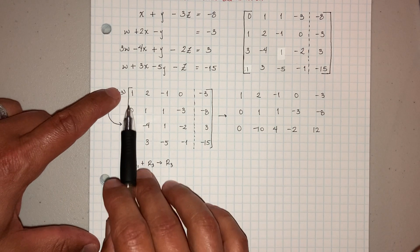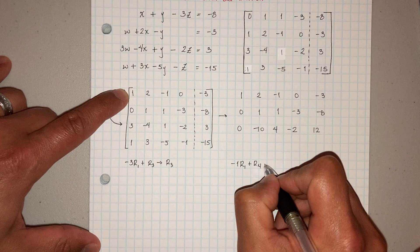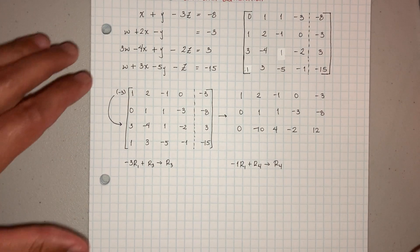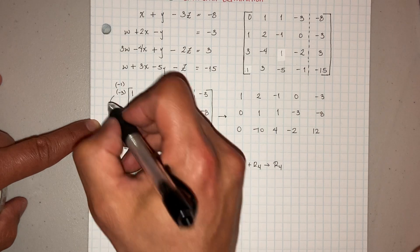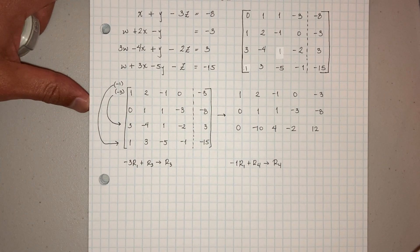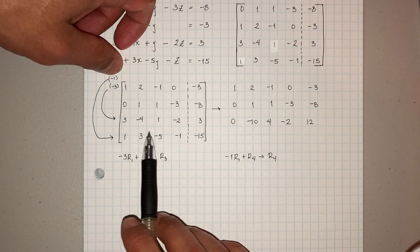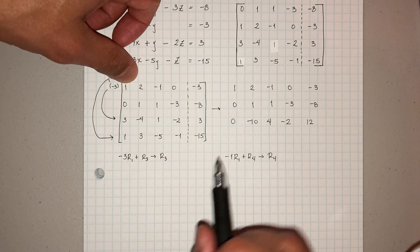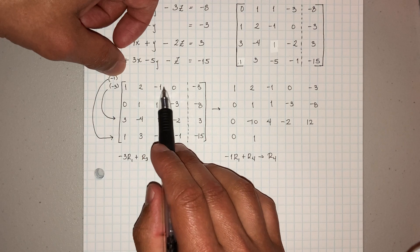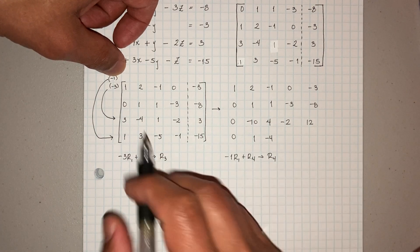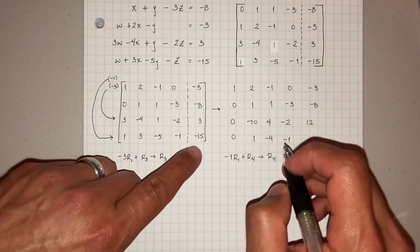So I'm going to take negative 1, multiply by the first row, and add it to the fourth row, replacing row 4. Negative 1 times 1 is negative 1, plus 1 is 0. Negative 1 times 2 is negative 2, negative 2 plus 3 is 1. Negative 1 times negative 1 is positive 1, 1 minus 5 is negative 4. Negative 1 times 0 is 0, 0 plus negative 1 is negative 1. Negative 1 times negative 3 is positive 3, 3 minus 15 is negative 12.